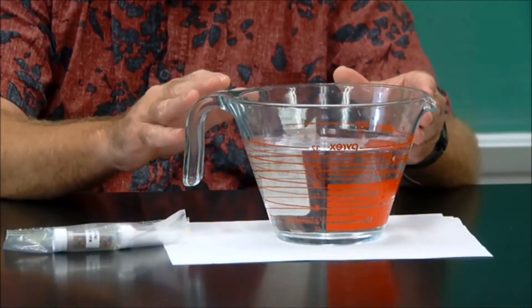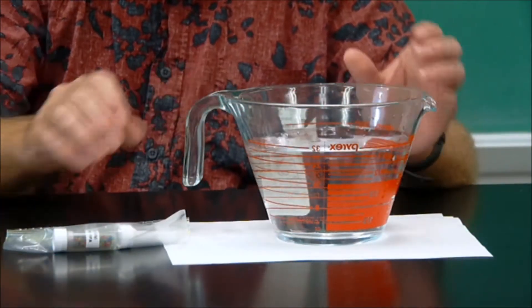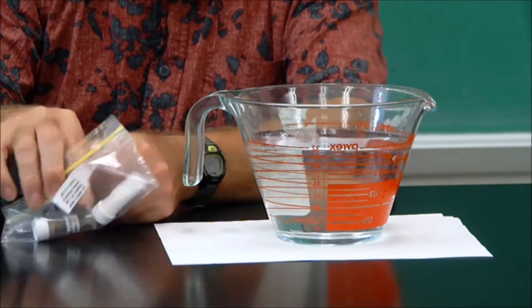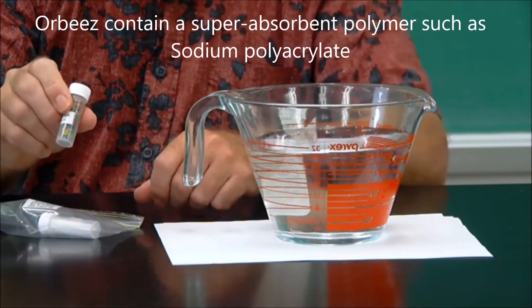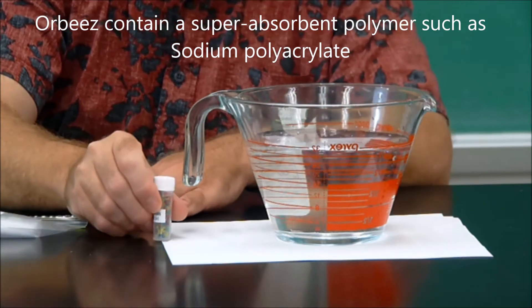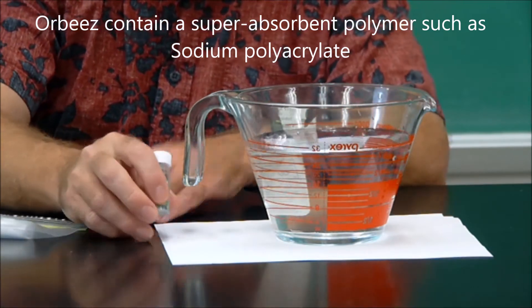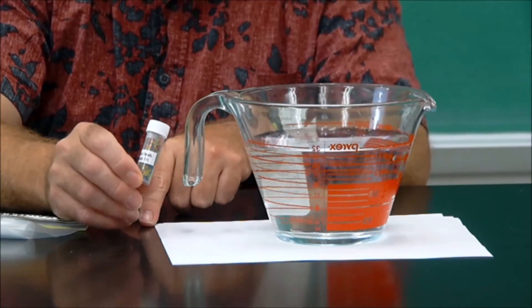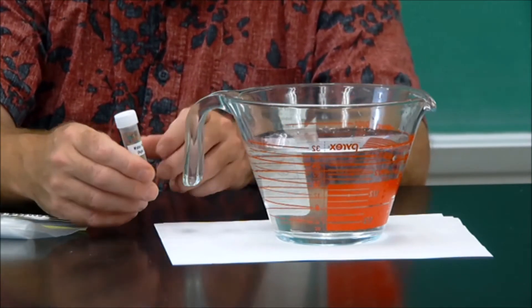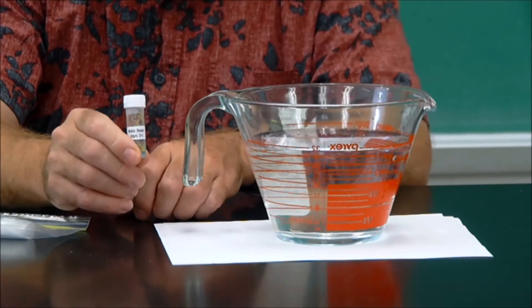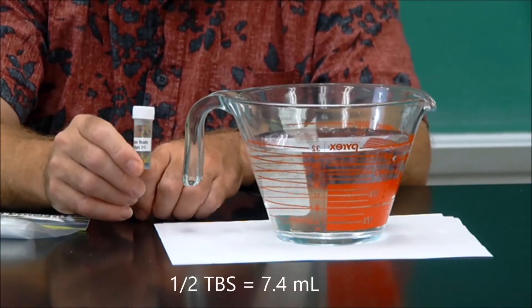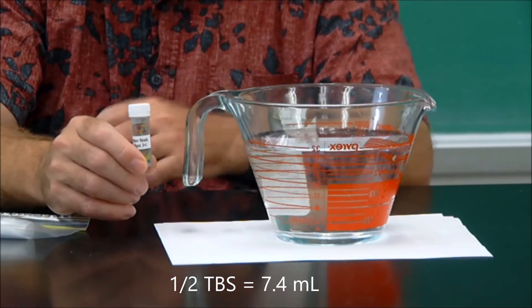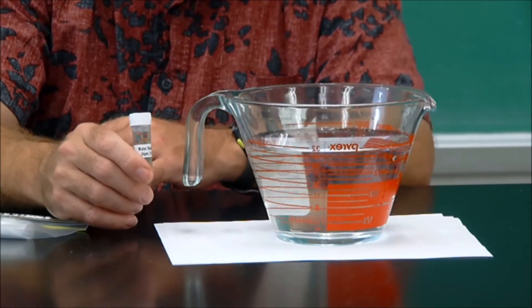Once you have your measuring cup full of the two or four cups of water, you want to go ahead and remove your Orbeez or water beads from the bag. Now these things are non-toxic. It's the same material that they put in disposable diapers, but they could pose a choke hazard to young children, so be sure to keep them out of reach. Now what we have here is about a half a tablespoon full of these water beads and we can equate that to about eight milliliters.